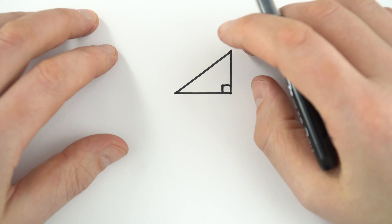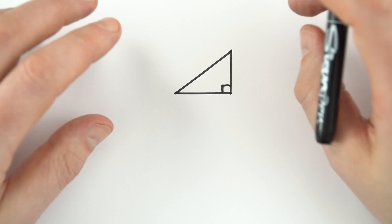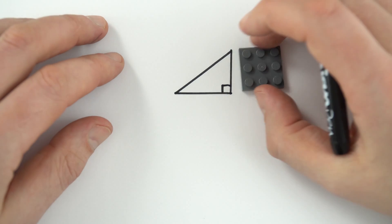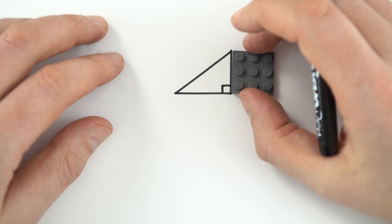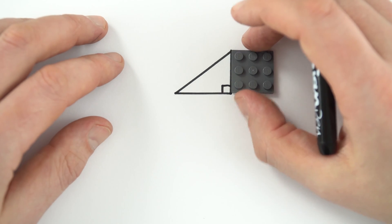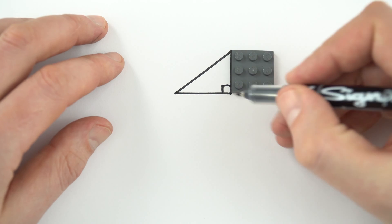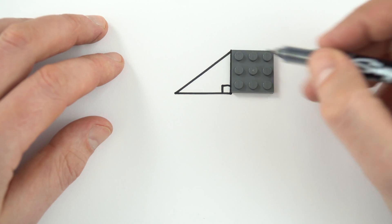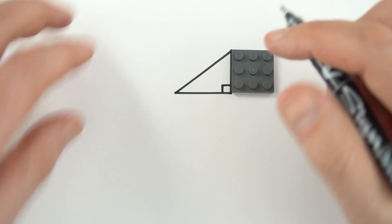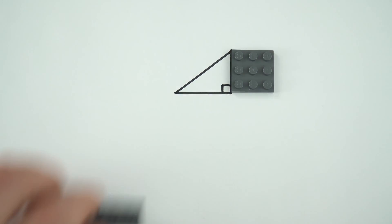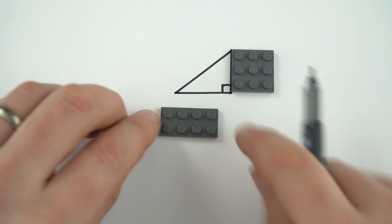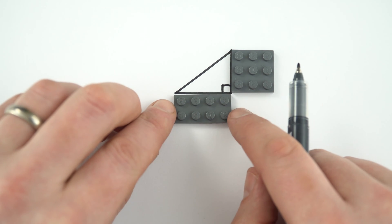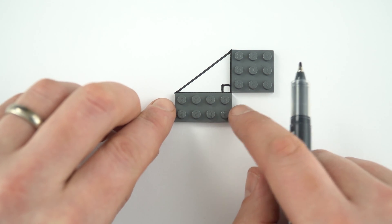This is a lovely shape and it comes up all over physics. It's just a right-angled triangle. I've made this side here three bricks long, so if I just put this square next to the side of that, I can also put a piece of Lego which is four bricks along the bottom.